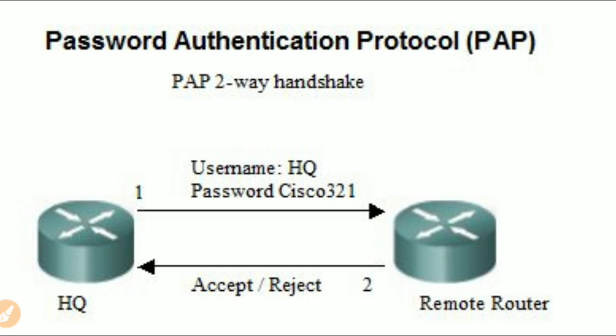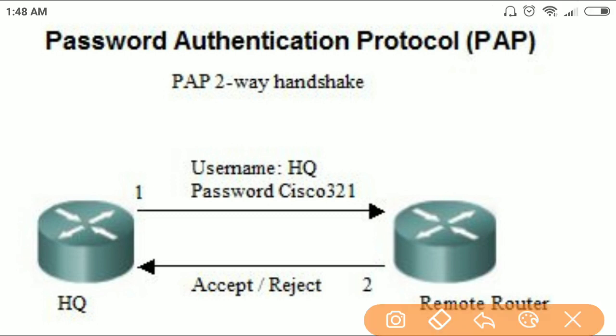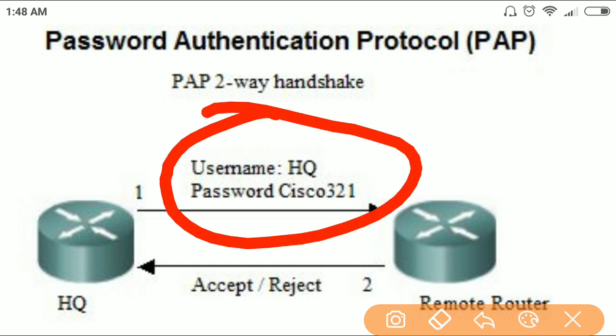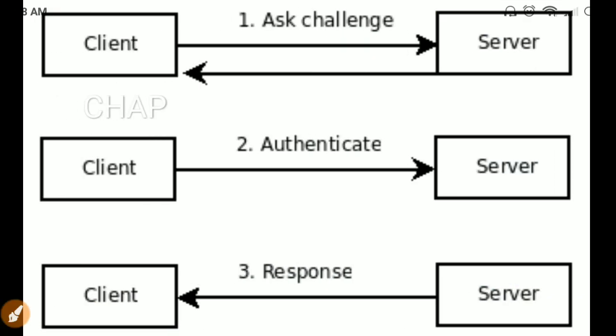The first protocol is the Password Authentication Protocol, which is a very weak authentication protocol because it sends the username and password in clear text. Any attacker can sniff this information and can launch a replay attack by replaying these credentials, so this protocol is very weak and should not be used.